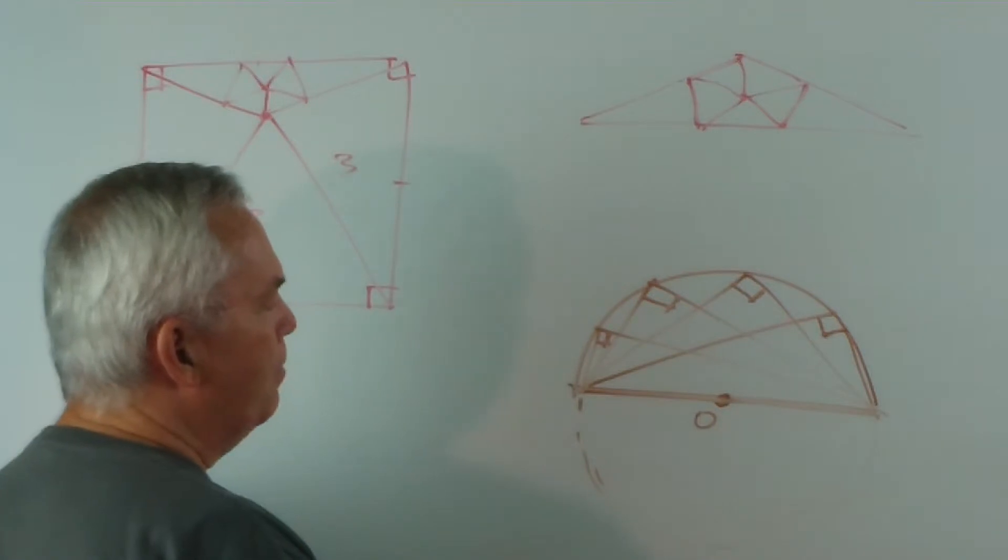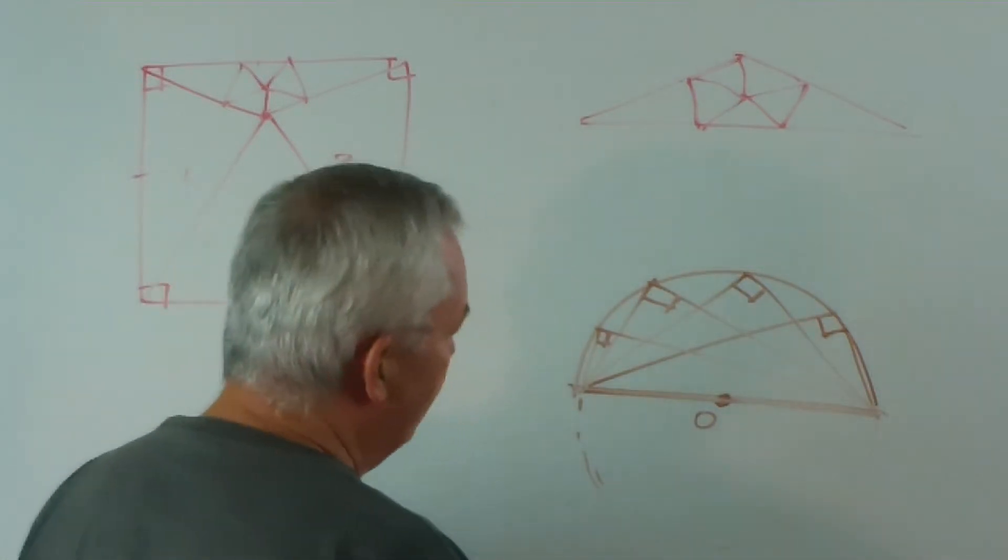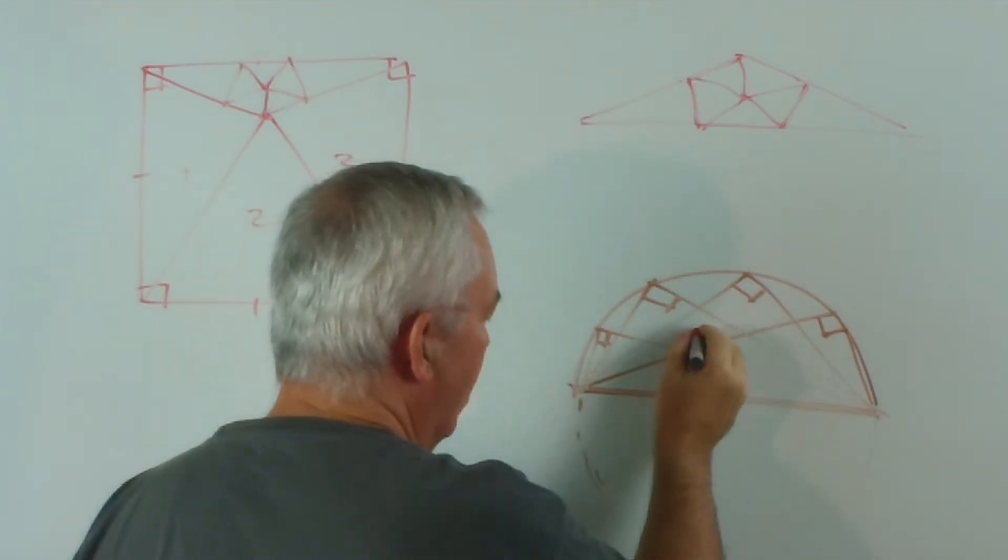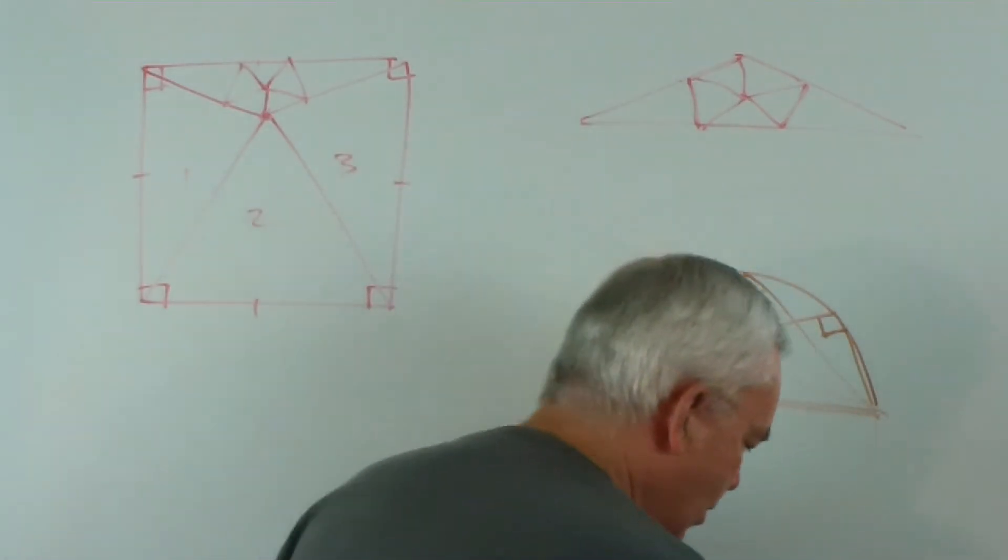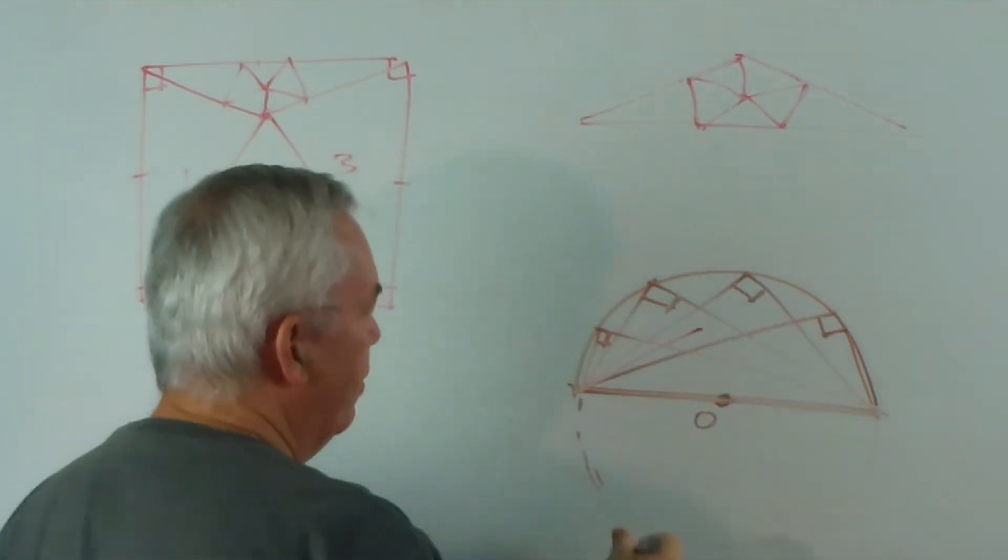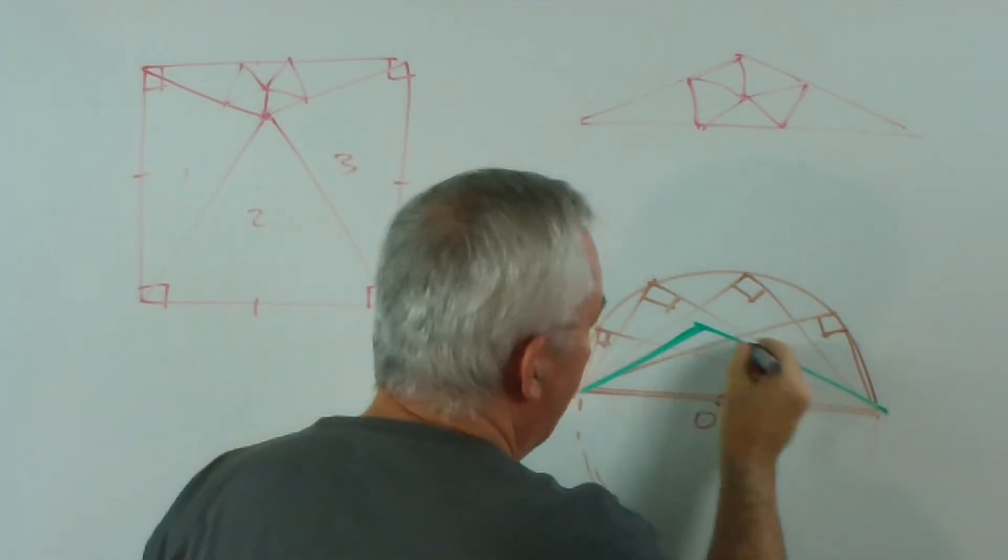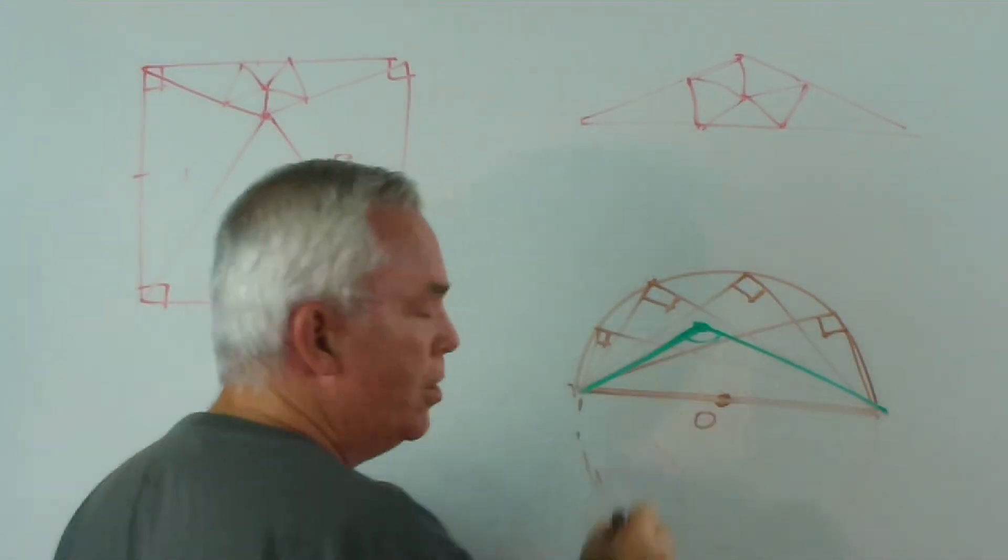What does that mean? Well, it means that if I choose a point inside the semicircle and join both ends of the diameter, let's do this in green, it means that I'll get an obtuse angle.